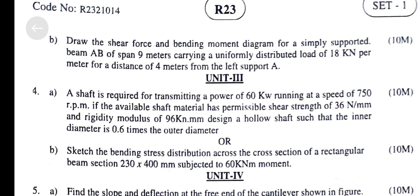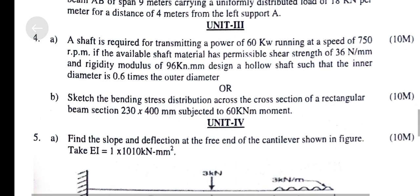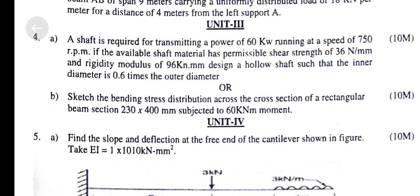Unit 3, Question A. A shaft is required for transmitting a power of 60kW running at a speed of 750 rpm. If the available shaft material has permissible shear strength of 36 N/mm² and rigidity modulus of 96 kN/mm²,